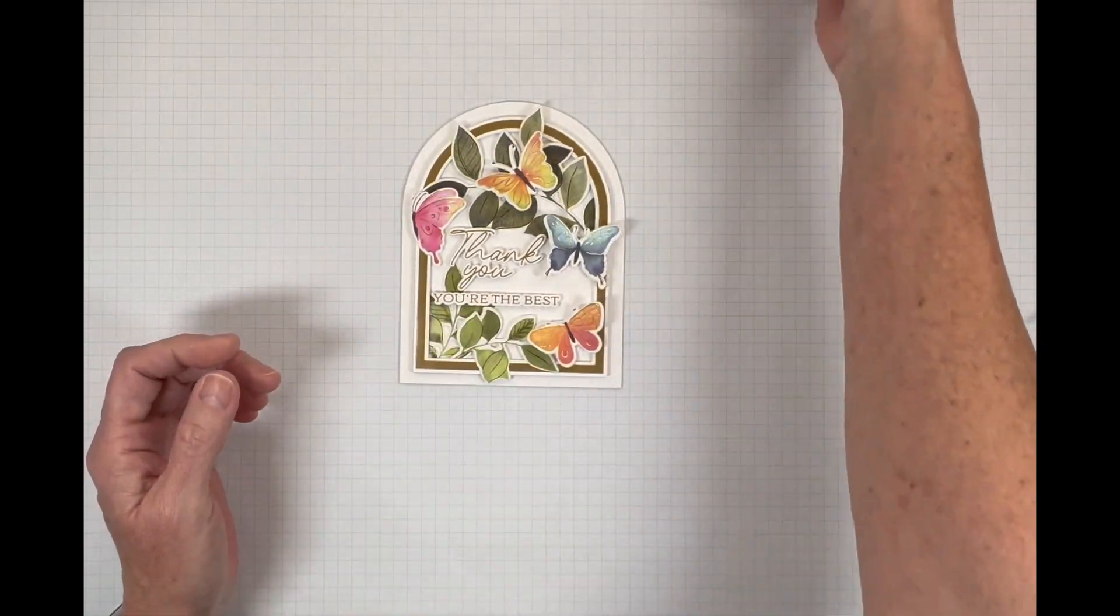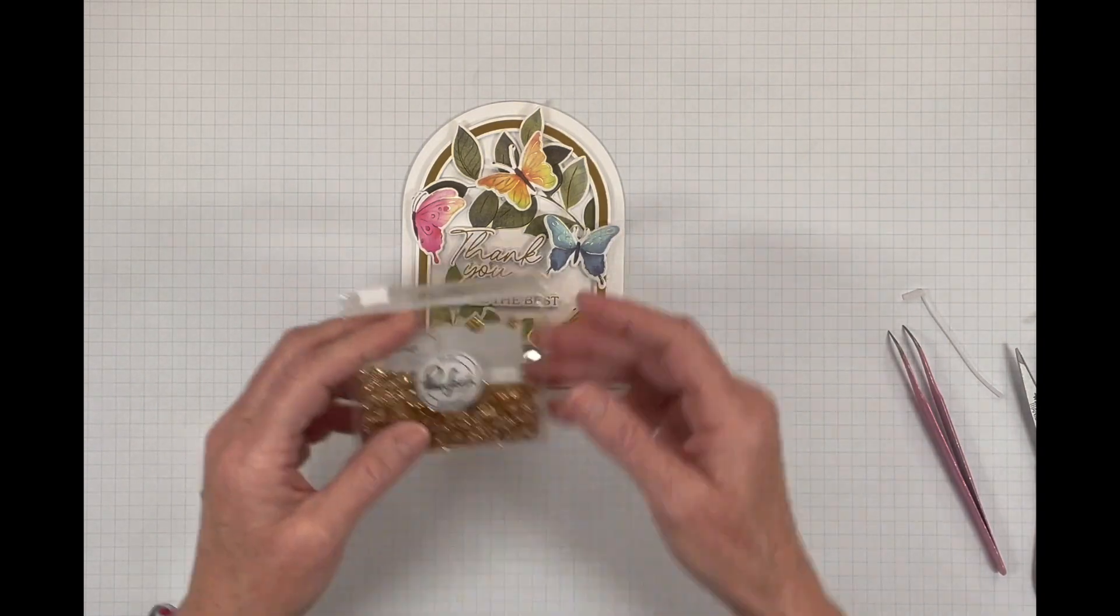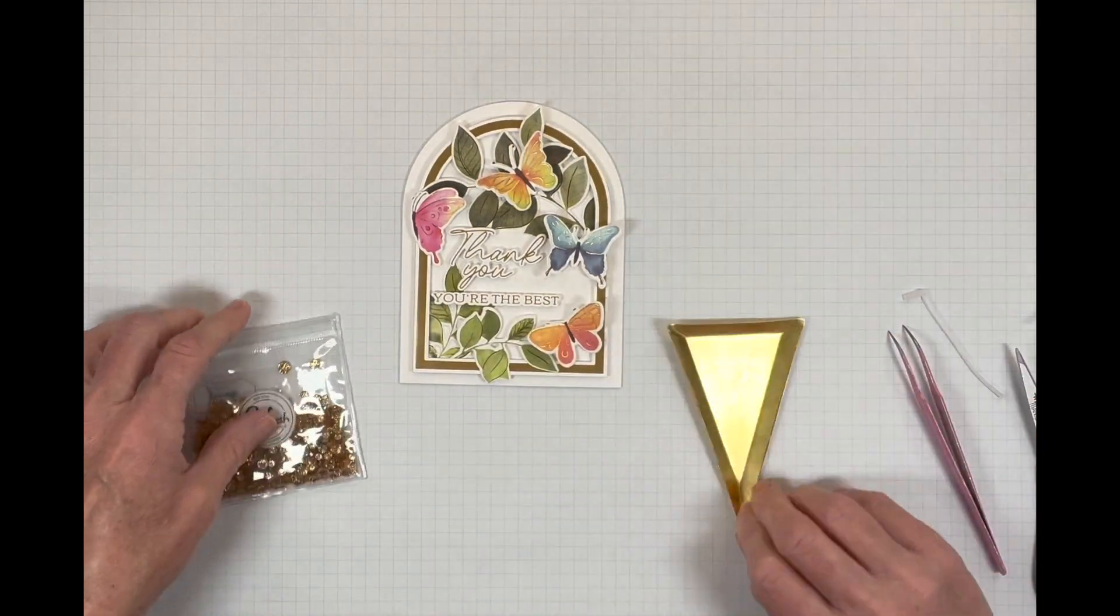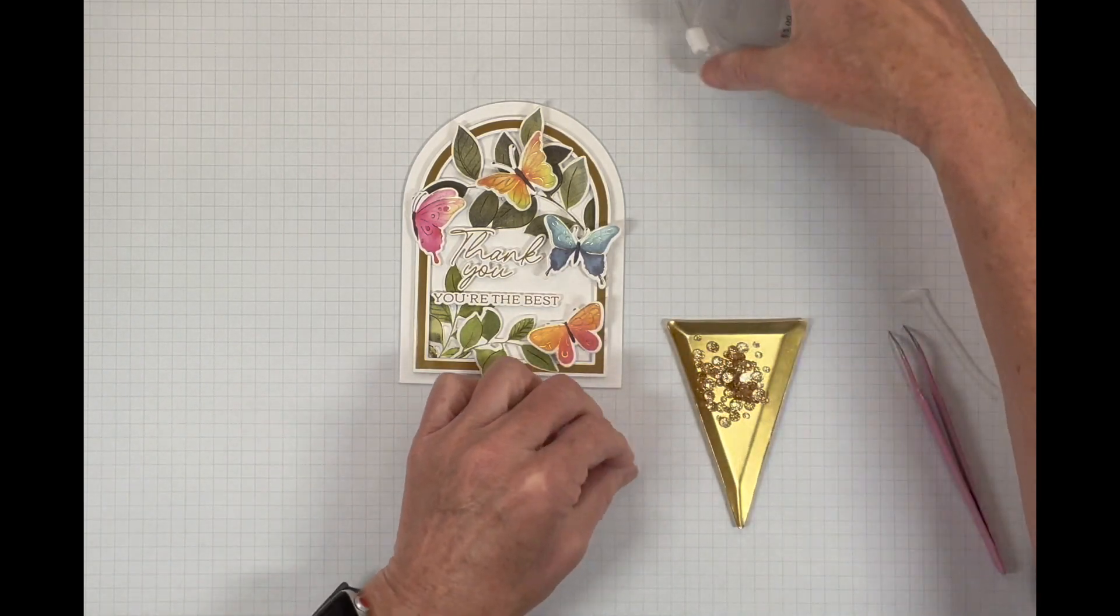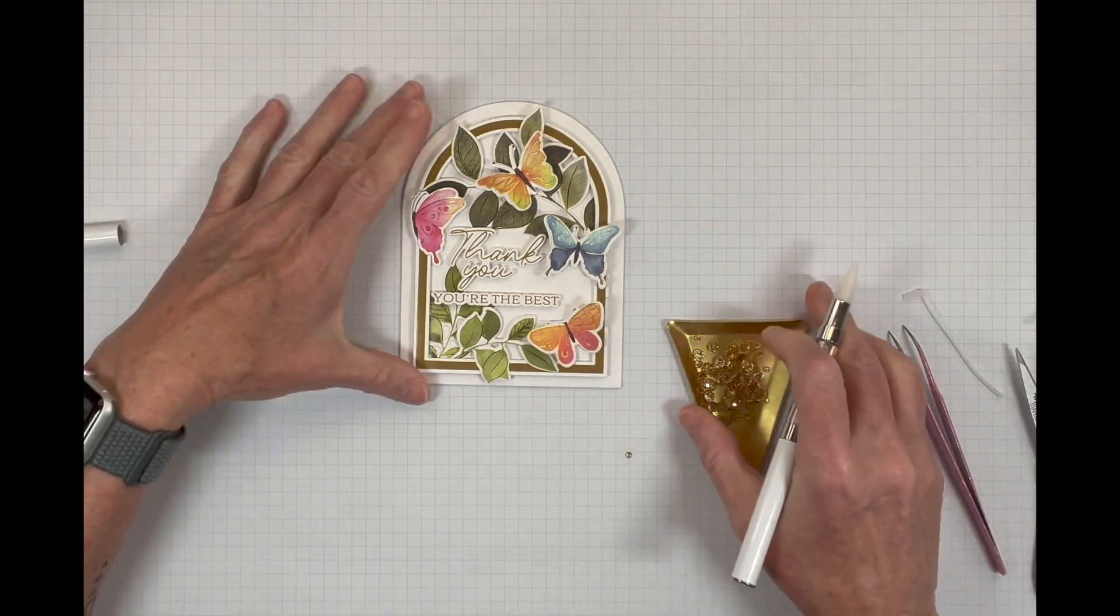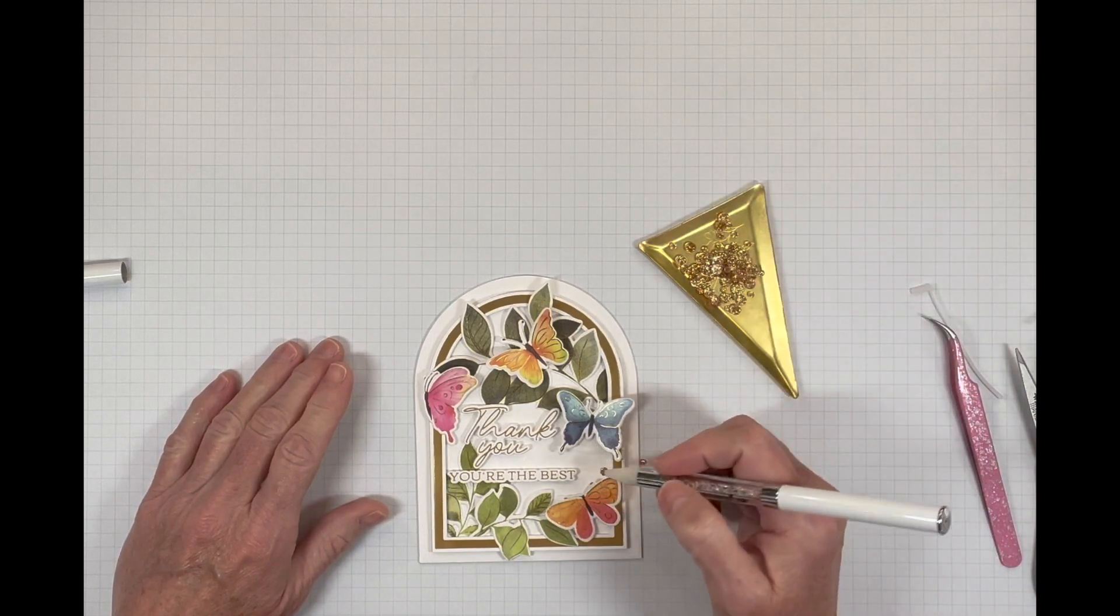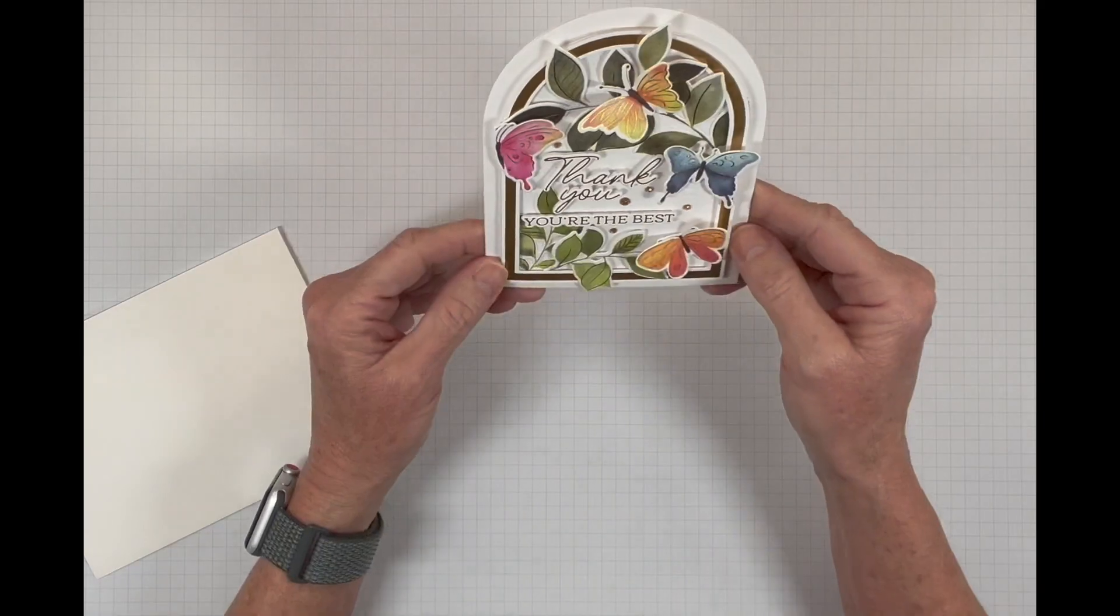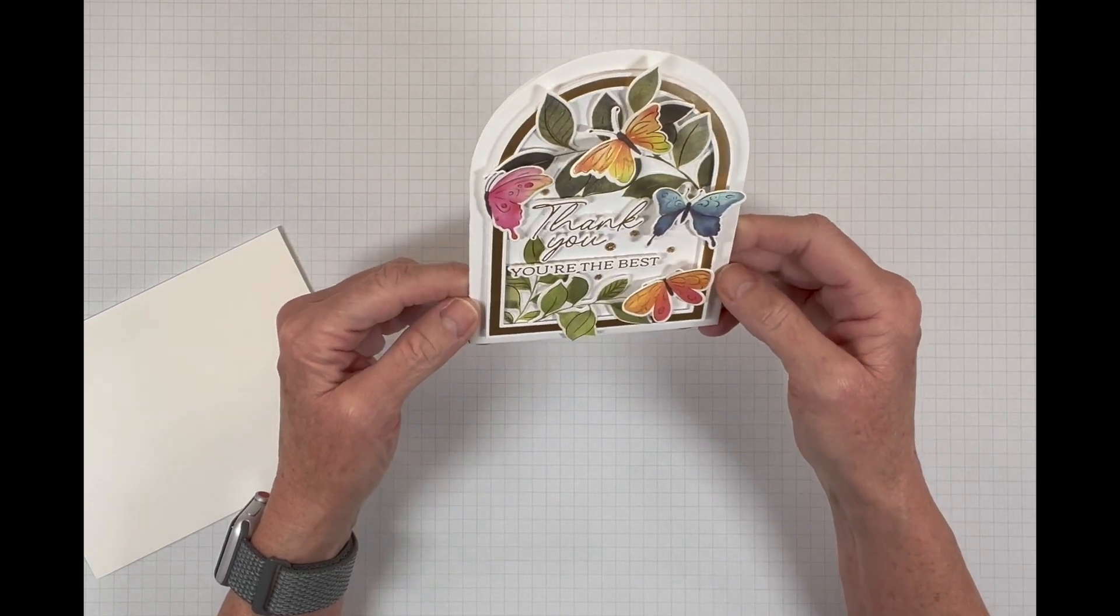So for my embellishments I used Pinkfresh glitter drops in the gold. Please be sure to give me a thumbs up. Please like this video. Please leave me a comment. I would appreciate it. We're just going to add some gems. And that card is done. That is so cute. I just love that.